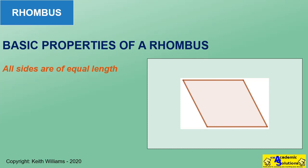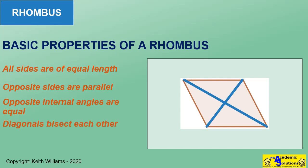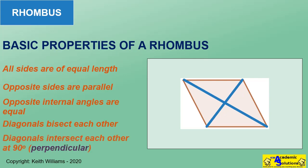Opposite sides of a rhombus are parallel to each other. Opposite angles of a rhombus are equal to each other. The diagonals of a rhombus bisect one another.